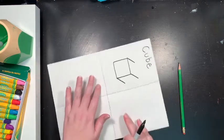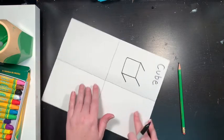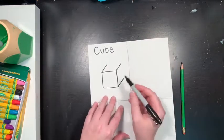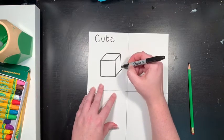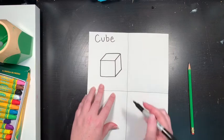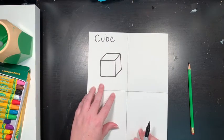Now it kind of looks like a table, doesn't it? If I turn it that way. Okay, now we're going to connect our lines together. And there you go. You have made a cube.